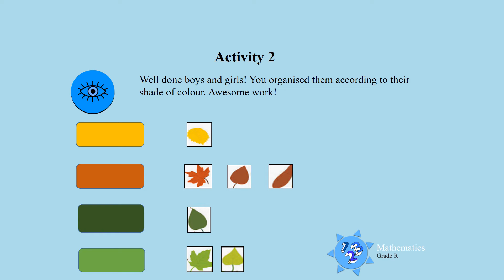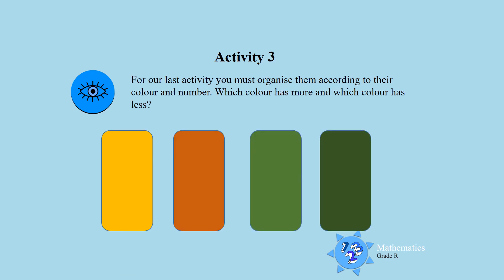So you sorted well boys and girls. Activity three: for our last activity you must arrange them according to their color and the number. So how many of each of these colors can you find? How many yellow leaves? How many brown leaves? How many light green leaves or dark green leaves could you find?